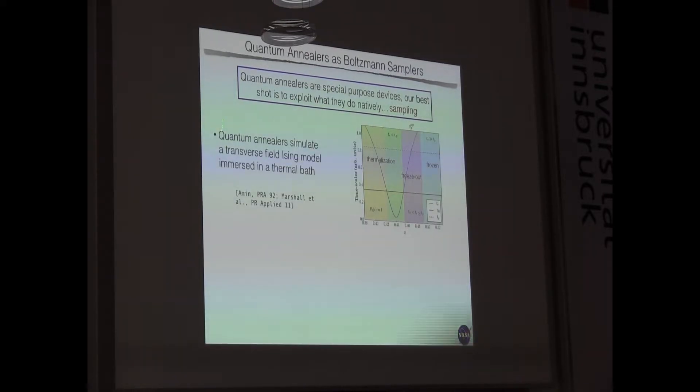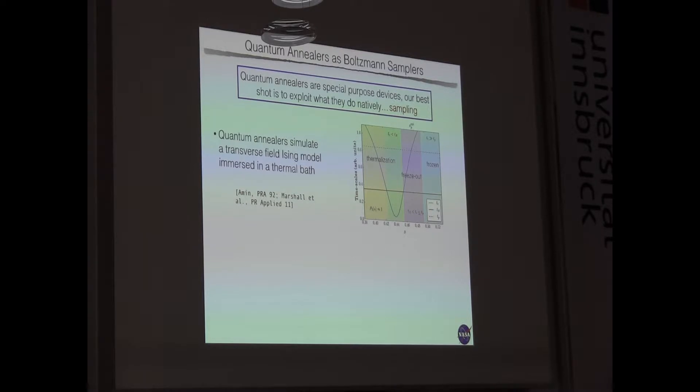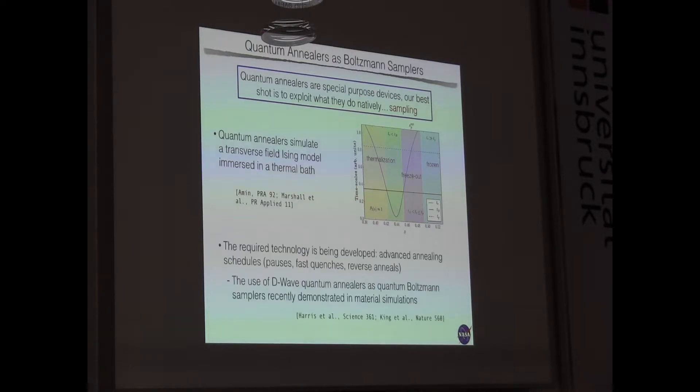Because they are immersed in a thermal bath, I would say what they do natively, what they do best is sampling. This is basically what David explained this morning. But because of interaction with a thermal bath, at the beginning, thermalization is fast. And if we use a technique that have been now developed, like pauses and annealing schedules, we can more reliably sample from thermal distributions. And actually, this capability was nicely shown in the quantum material science papers by D-Wave.